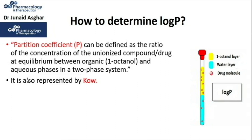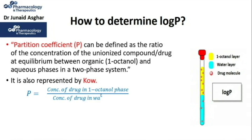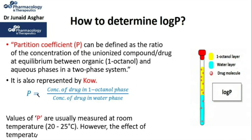The partition coefficient is also represented as K_OW, where O stands for oil and W for water. P is calculated by the equation: P equals concentration of drug in the 1-octanol phase divided by concentration of drug in the water phase. Values of P are usually measured at room temperature, 20 to 25 degrees centigrade, though the effect of temperature on the partition coefficient is not great.